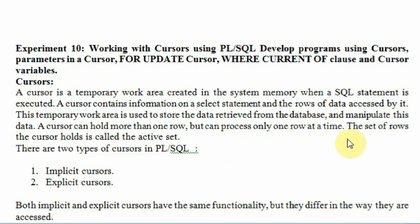The set of rows the cursor holds is called the active set. So when we say 'select * from sailors where sailors.rating > 5', the result we get — the set of rows that we are going to act upon — those rows are named with the cursor name, and those rows are called the active set.